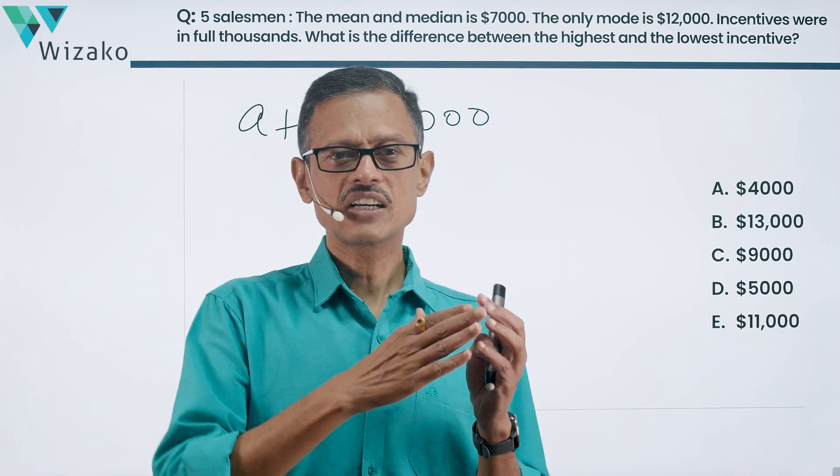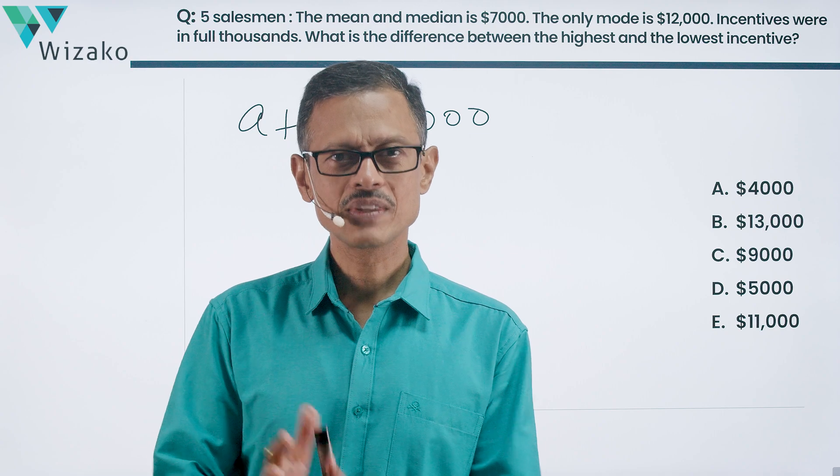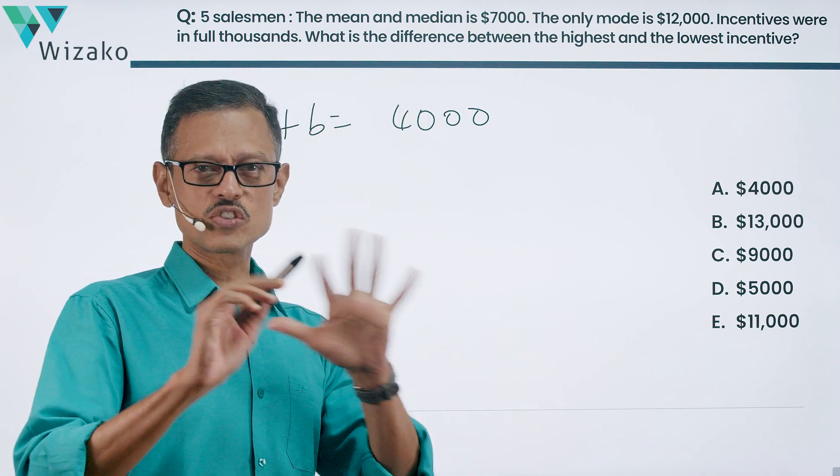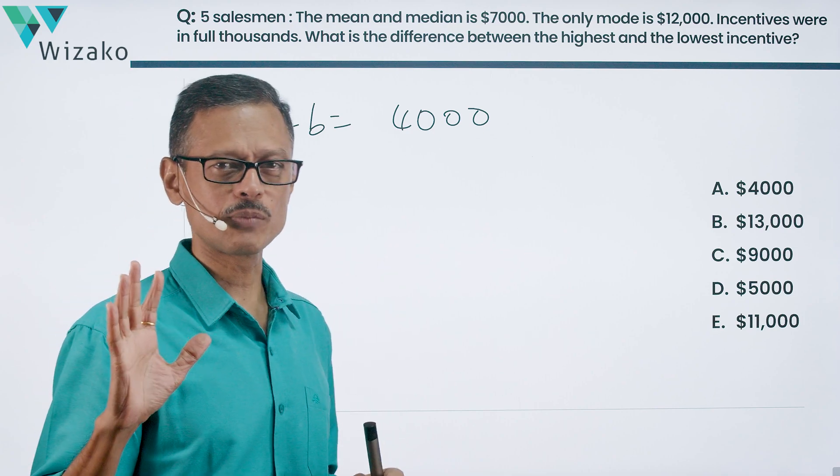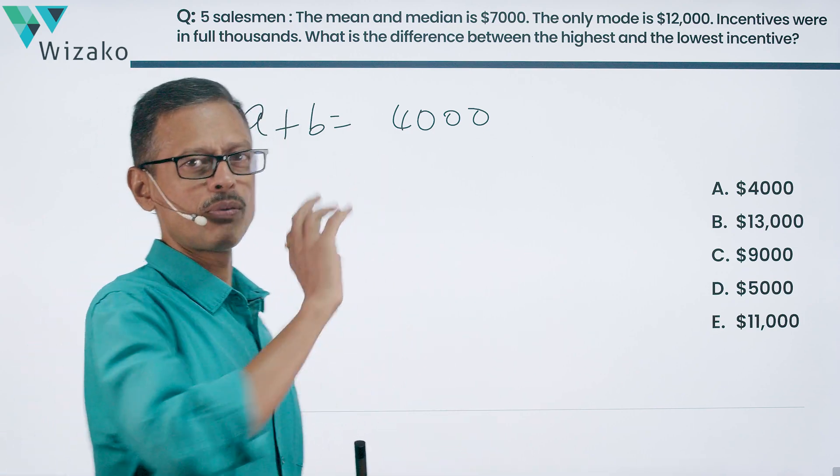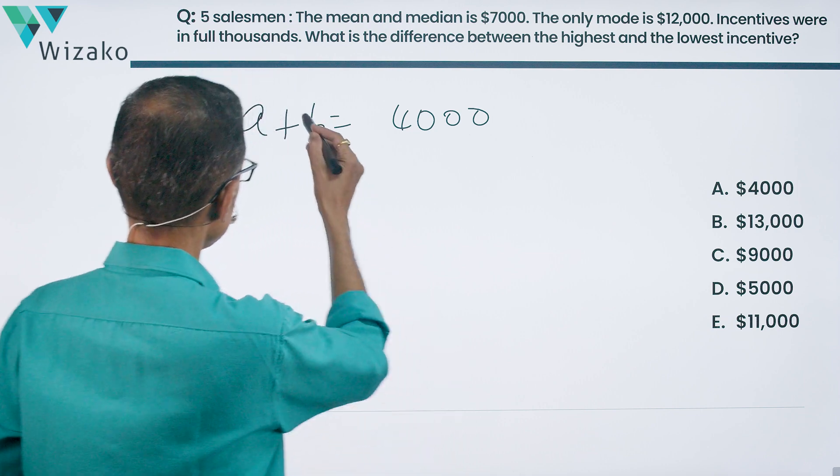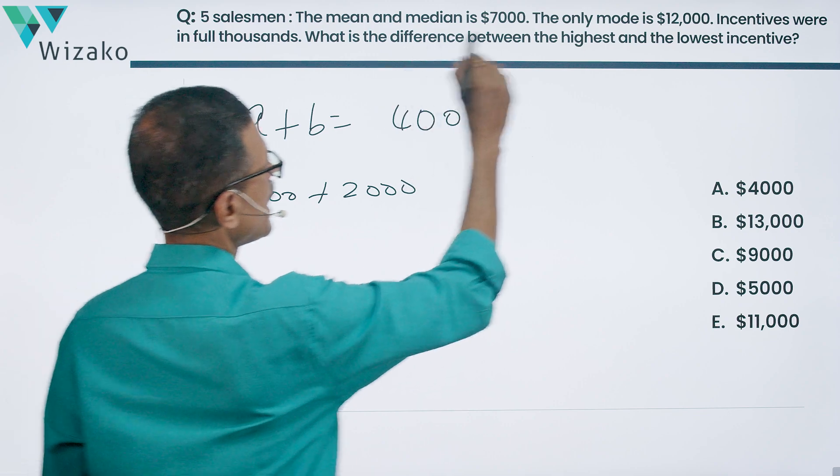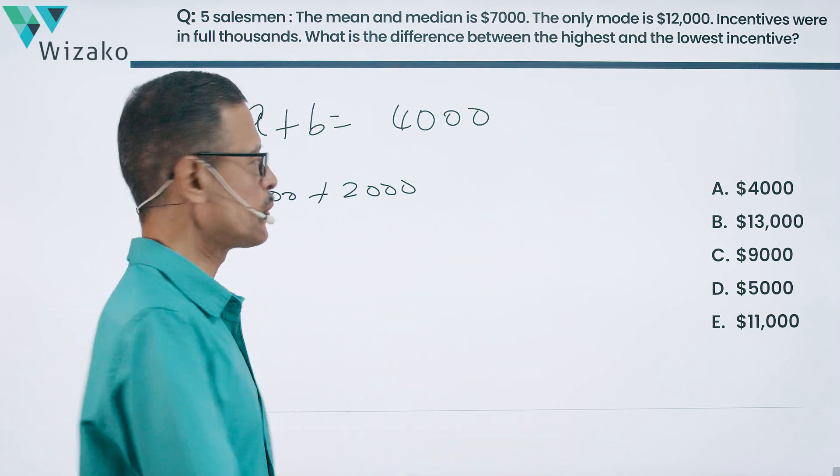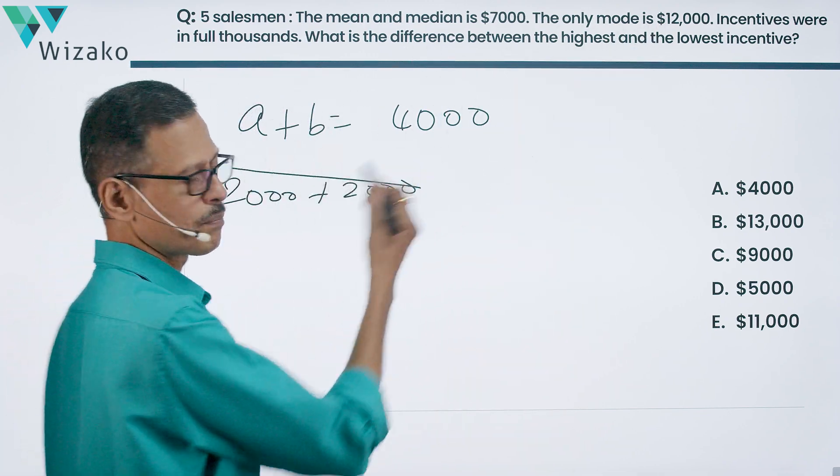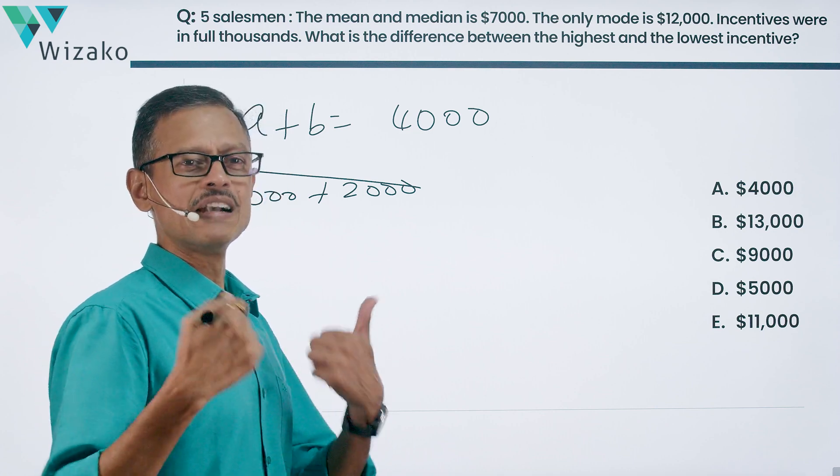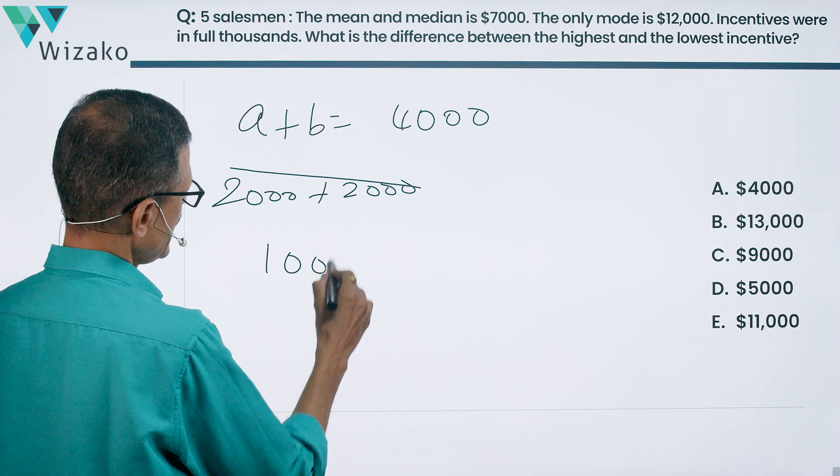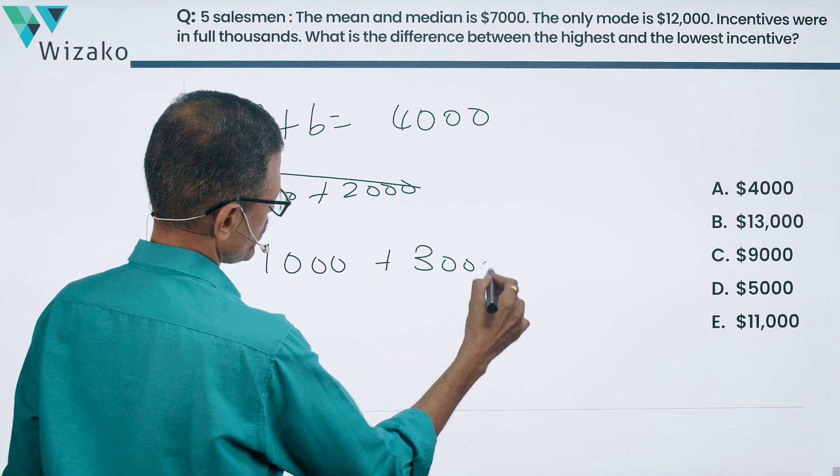A plus B is equal to 4,000 is what we have. The incentives received are in multiples of thousands. All of these five salesmen have received incentive. So 0 plus 4,000 is not possible. Negative incentives are obviously not possible. So these numbers will have to be positive integers, multiples of 1,000. Can it be 2,000 and 2,000? That would have been a possibility if we had more than one mode because there's only one mode. This is ruled out. So we need to get A plus B to be 4,000, multiples of 1,000 and two distinct values. That's possible when A is equal to 1,000 and B is equal to 3,000.